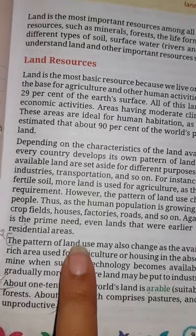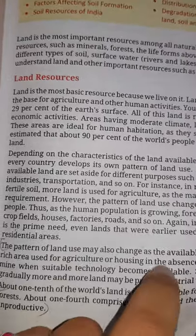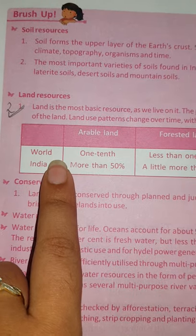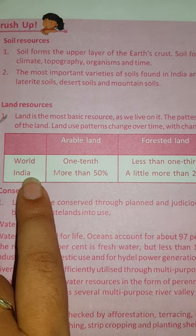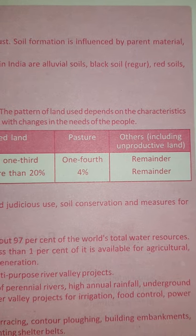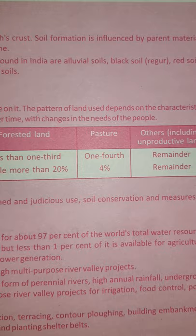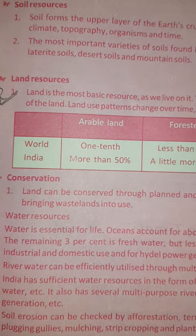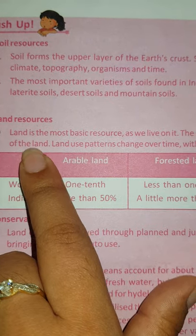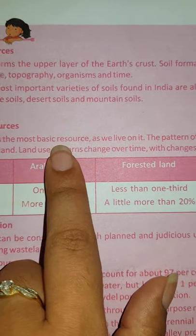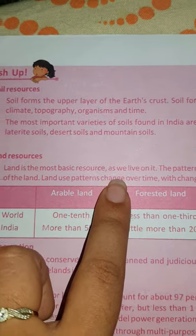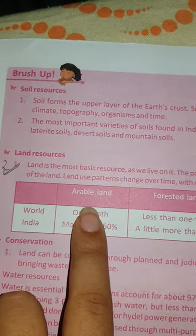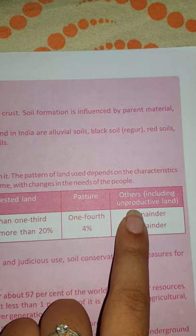After writing down these questions, you have to draw the table which was given on page number 15. This is a distribution table of land. You have to draw this table after this paragraph. First write this point and then draw the table: Land is the most basic resource as we live on it. The pattern of land use depends on the characteristics of the land. Land use pattern changes over time with changes in the needs of people — arable land, forest land, pasture and other unproductive land.